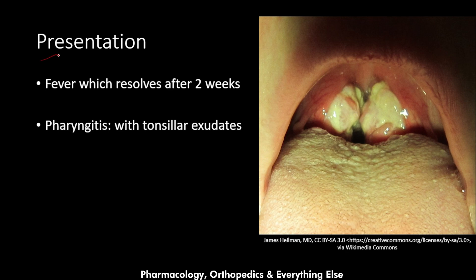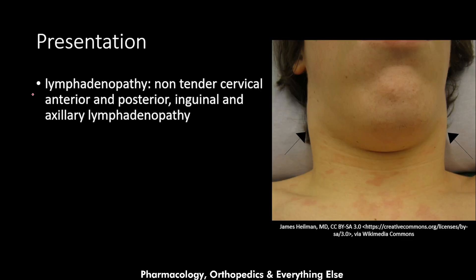Regarding presentation, mono presents with fever which resolves after two weeks, and pharyngitis with tonsillar exudates — there is pharyngitis and exudates on the tonsils as shown. It also presents with lymphadenopathy, which is non-tender cervical — both anterior and posterior — and sometimes inguinal and axillary lymphadenopathy.